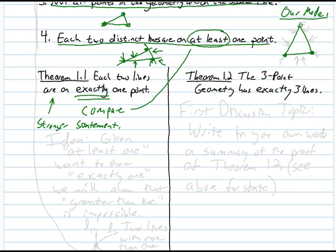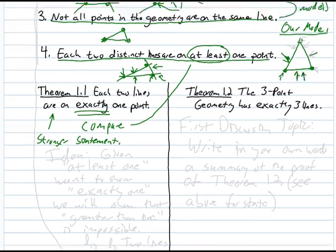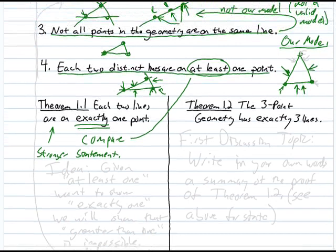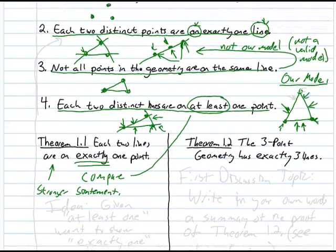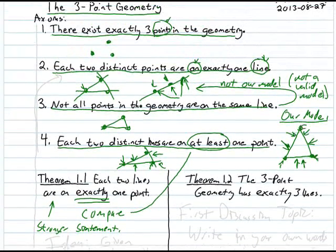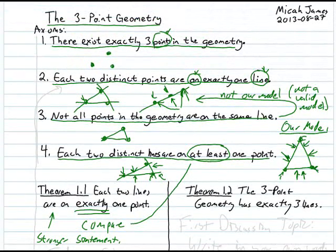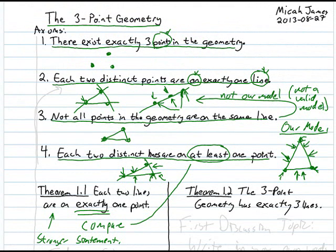This appears true in our model: this line and this line have exactly this one point in common, and likewise for each other pair of lines. But since the model is not itself a proof, we need a formal proof using the four axioms.